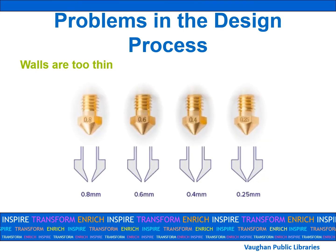All 3D printers have a minimum wall thickness based on the nozzle on the extruder. If a print fails due to weak points, thicken the walls in your design and try again.